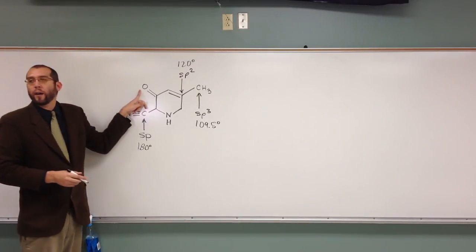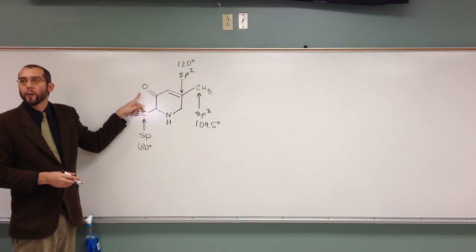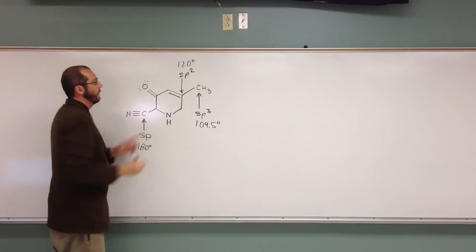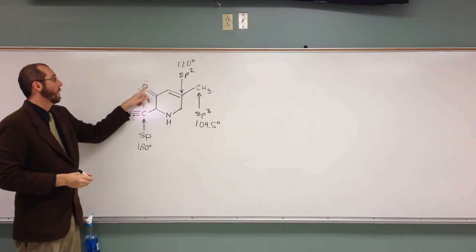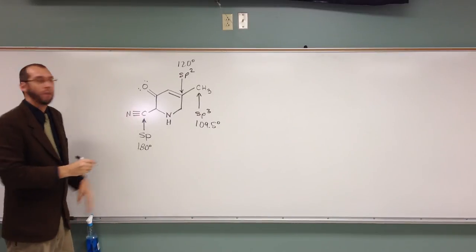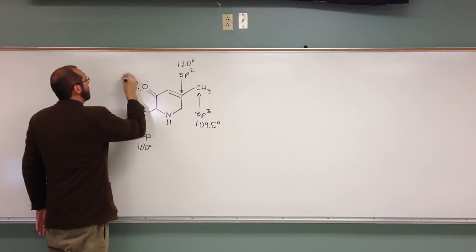So, how many lone pairs are on that oxygen atom? Two lone pairs. So it looks like that, right? So there's three electron groups. So what's the hybridization of that oxygen? SP2. SP2. Very good, yeah. So that one's SP2.